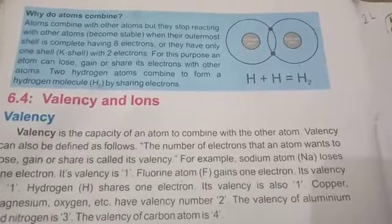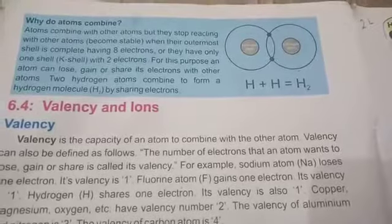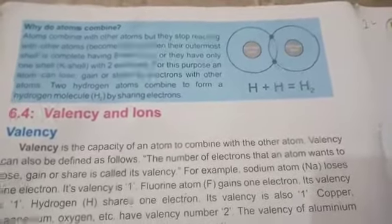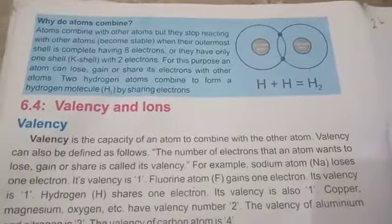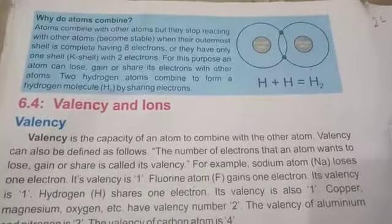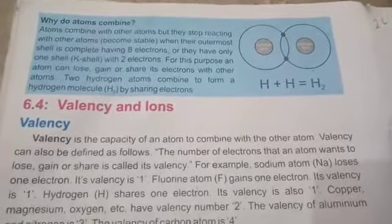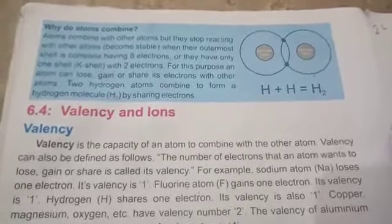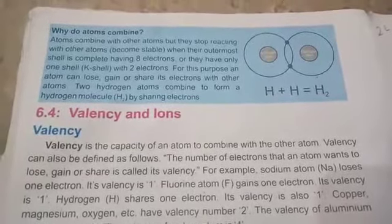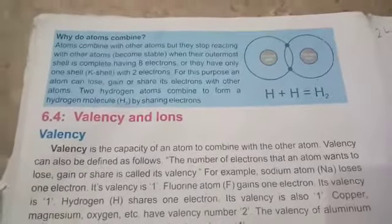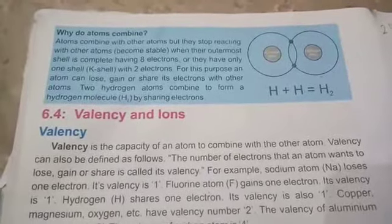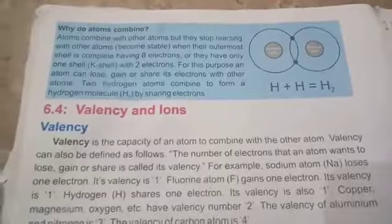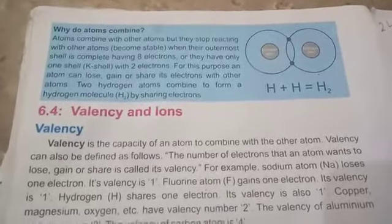Assalamu alaikum students, hope you all are fine. We have started chapter number six: Structure of an Atom. We have studied that the central part of the atom is called the nucleus, and the circular parts around the nucleus are called shells or energy levels. There are a fixed number of electrons in every shell. Using the 2n² formula, we can calculate the number of electrons in the shells. The outermost shell of the atom is called the valence shell.